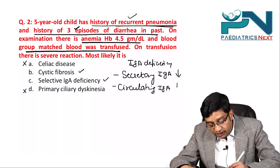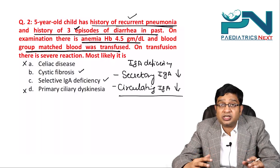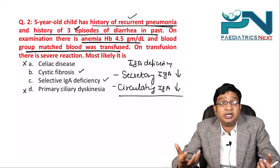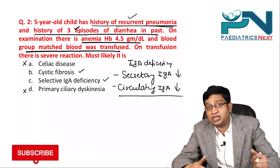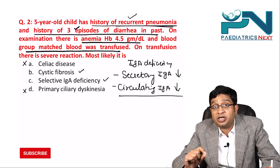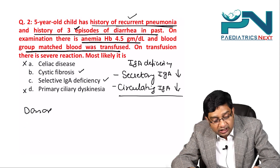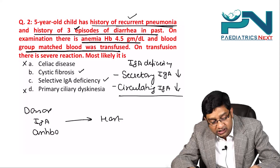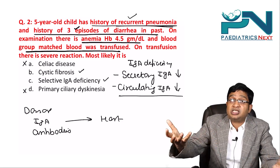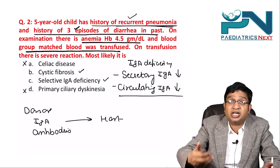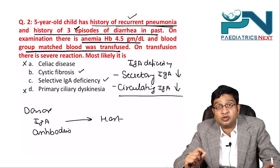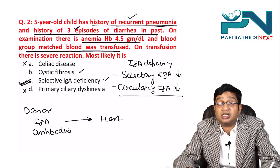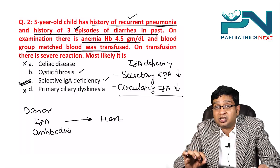If circulating IgA is decreased, the host's lymphocytes have never been exposed to donor IgA. When blood group matched blood is transfused, the donor's IgA antibodies enter the host and act as foreign substances, triggering a reaction that mimics a blood transfusion mismatch. Therefore, the answer is selective IgA deficiency.